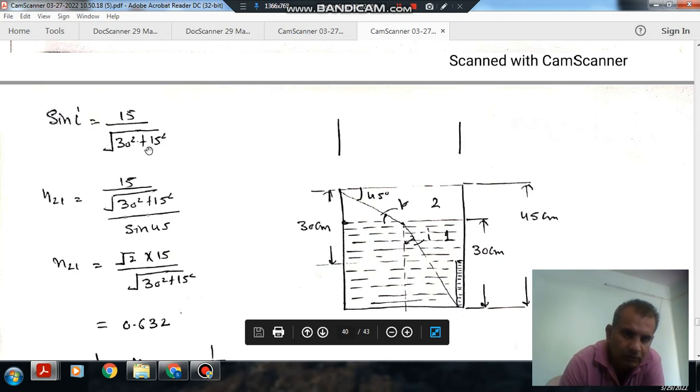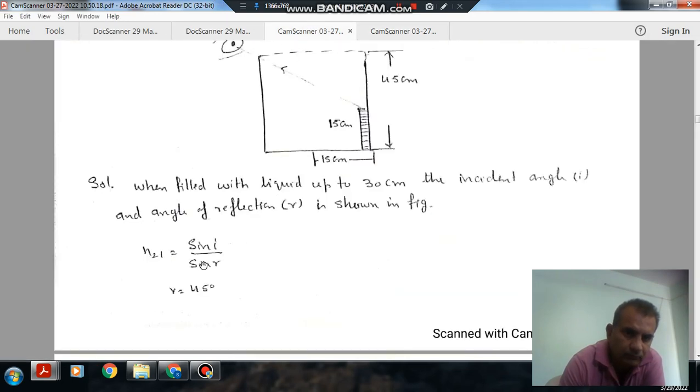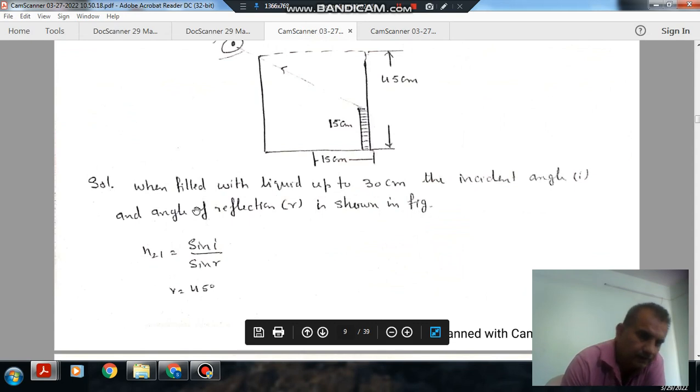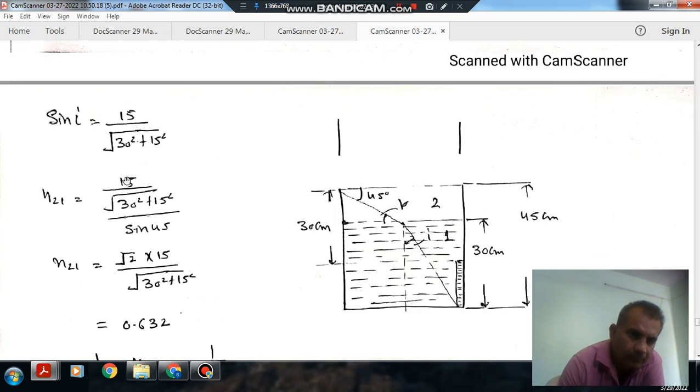So n21 is your 15 squared plus 15 squared. N21 equals sine i divided by sine gamma. And sine i is your 15 divided by root of 30 squared plus 15 squared.